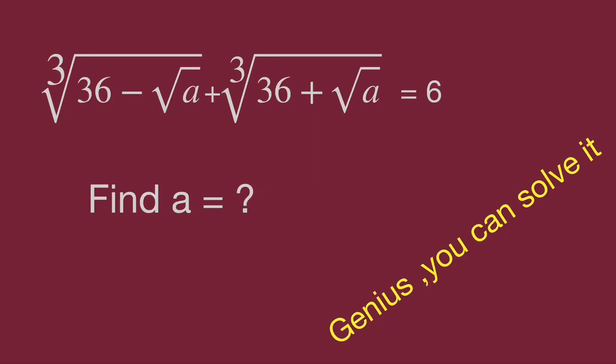Welcome to Bala Hippo math genius riddle. The question is: cube root of 36 minus a squared plus cube root of 36 plus a squared equals 6. Find the value of a. Can you find the value of a?